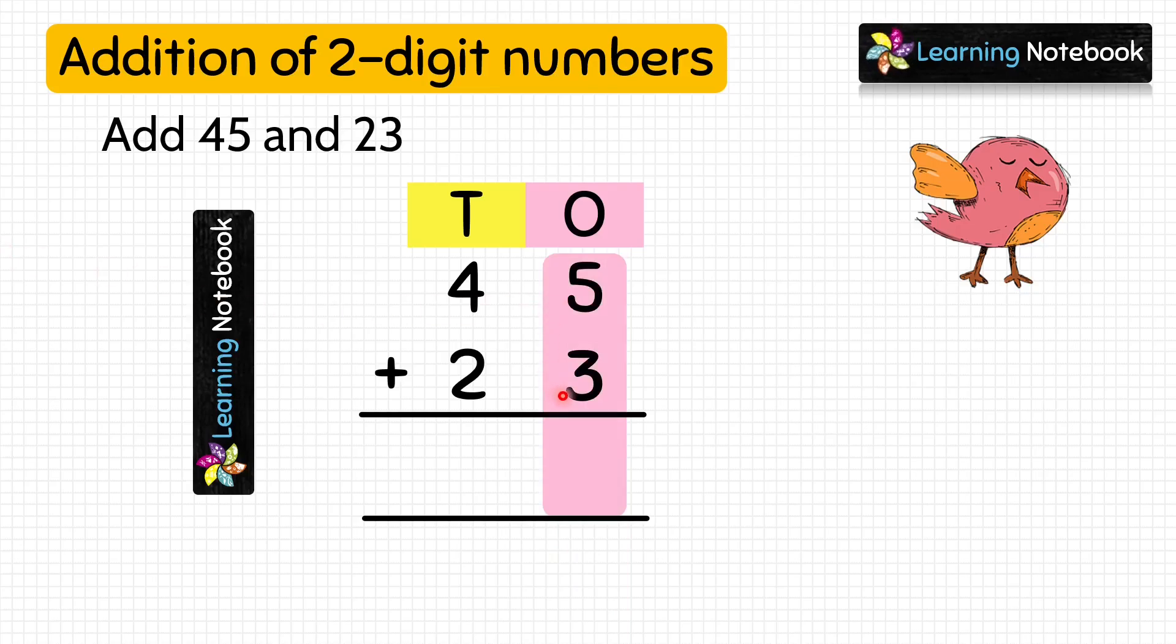Now let's add the digits at tens place. 4 plus 2 equals 6. So the answer is 68. 45 plus 23 equals 68.